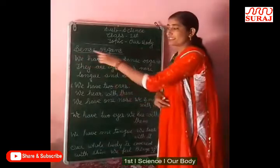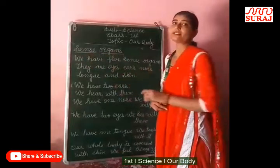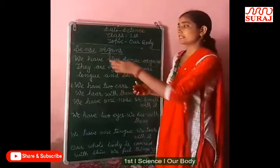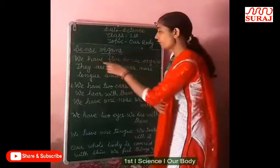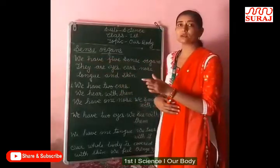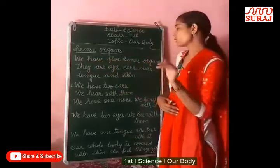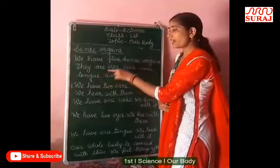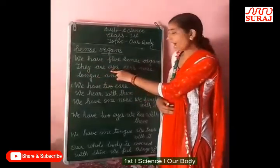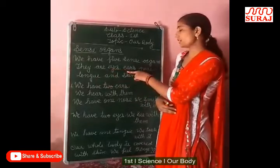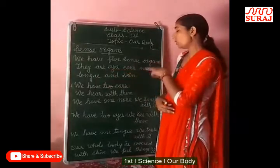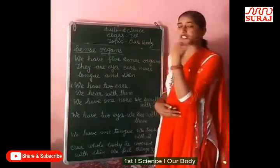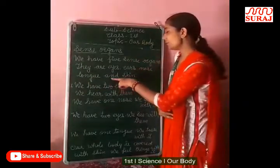Sense organs are very important. We have five sense organs. They are: eyes, ears, nose, tongue, and skin.